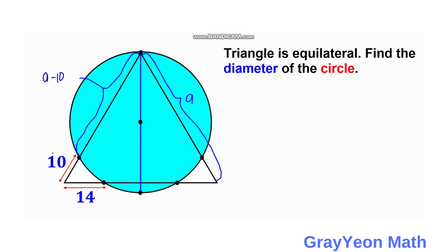So since this is equilateral this length is also 14 because the diameter divides the triangle into two parts on the left and the right so this is 14. So this length is actually A minus 14.